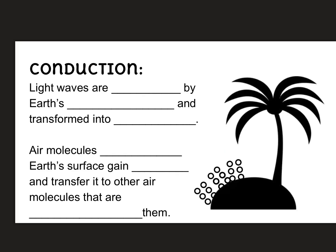The second step in how the Earth's atmosphere is heated is through the process of conduction. Light waves are absorbed by Earth's surface and transformed into thermal energy, or heat.